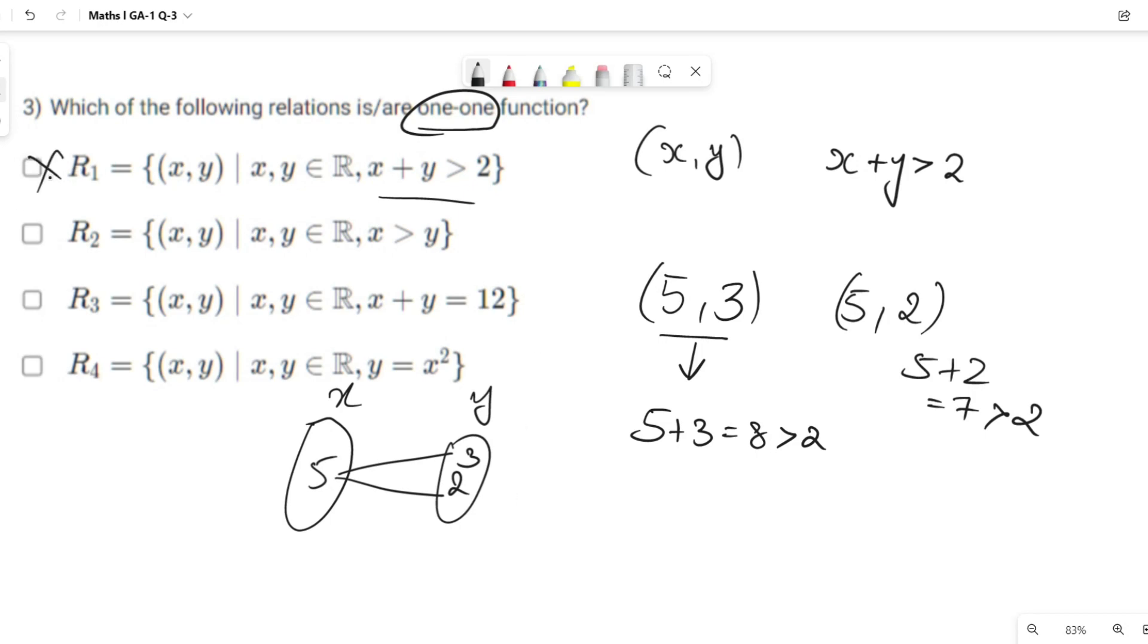Second option, x > y. Yeah, this is again the same. Let us take (5, 3) and (5, 2). Here x is 5. 5 > 3, also 5 > 2. Both belong to second relation R2, but it's not a 1-1 function. It's again a many-1 function.